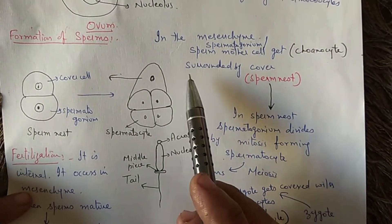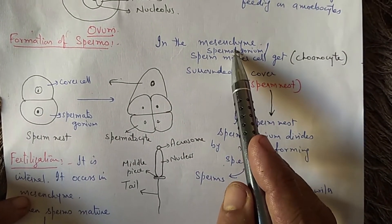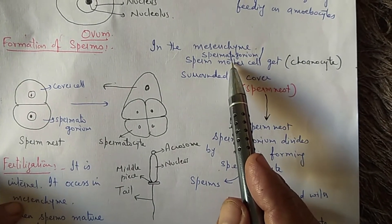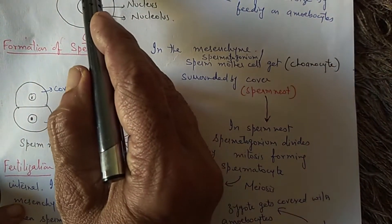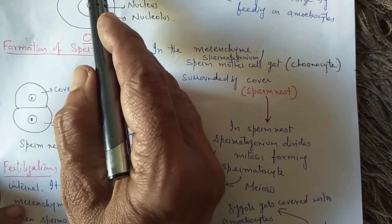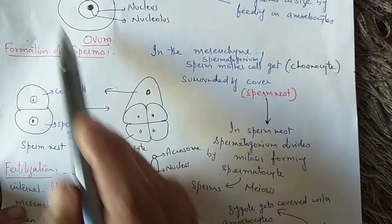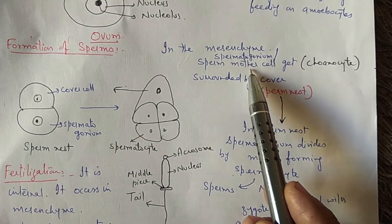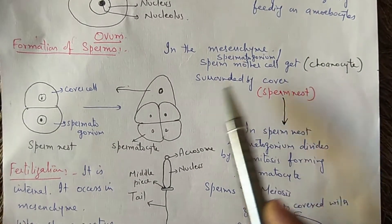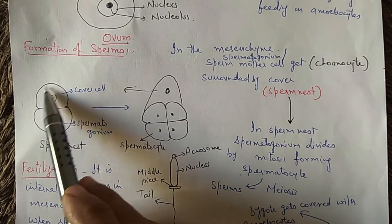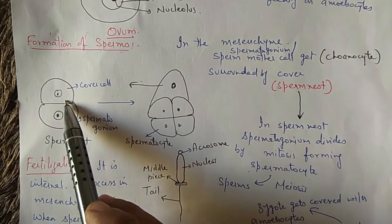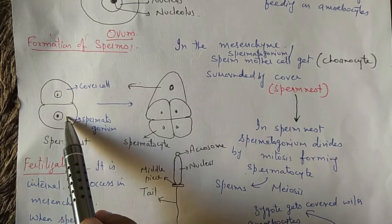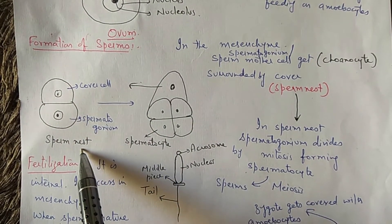Now, regarding the formation of sperm. The sperm mother cell may be a choanocyte. If a choanocyte acts as the sperm mother cell, it will lose its flagellum and withdraw its collar. The sperm mother cell gets covered by a cover cell, which is some other amoebocyte. The whole structure is known as sperm nest.